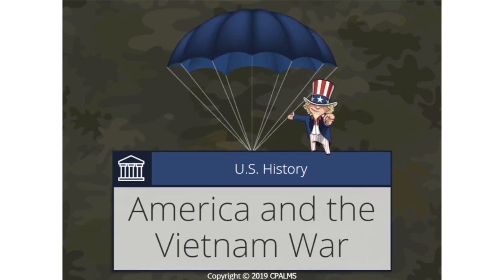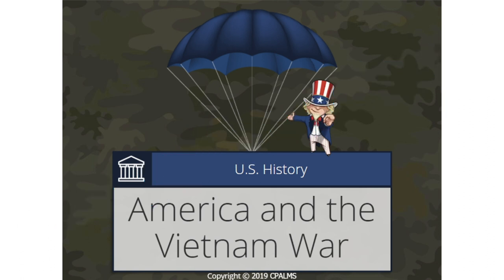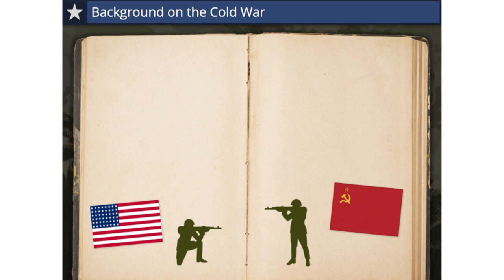Welcome to America and the Vietnam War, an interactive U.S. history tutorial for students like you. Let's begin by reviewing the time period of the Vietnam War, which took place during the Cold War era. After the end of World War II, the United States and the Soviet Union were the two most powerful nations left standing, but the former allies now became enemies.